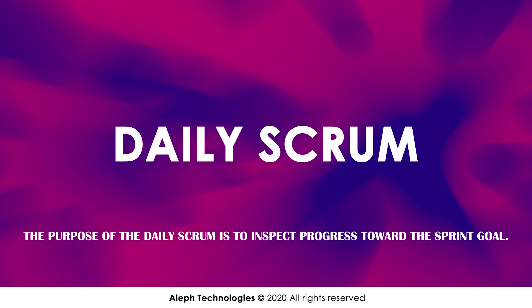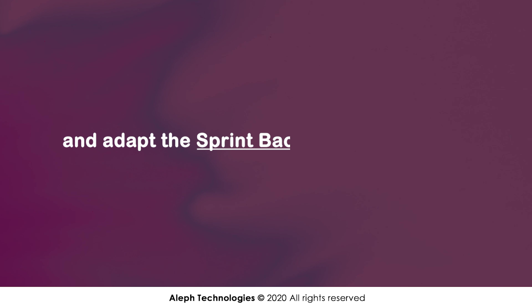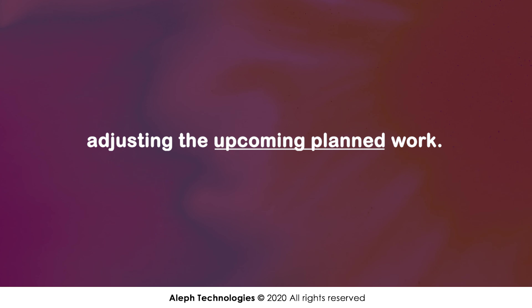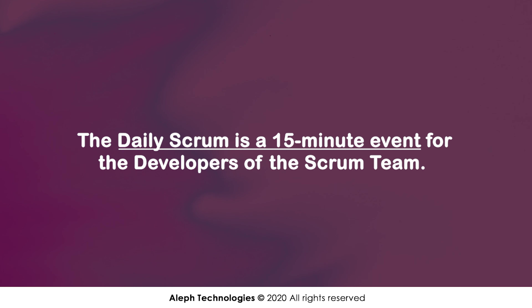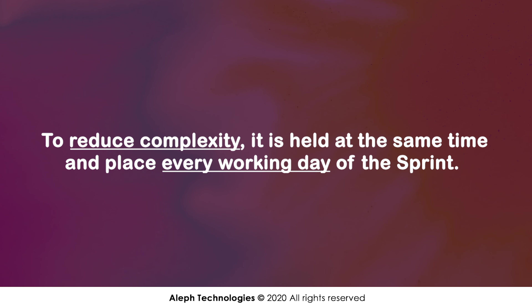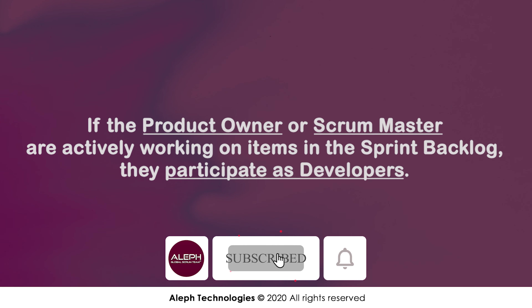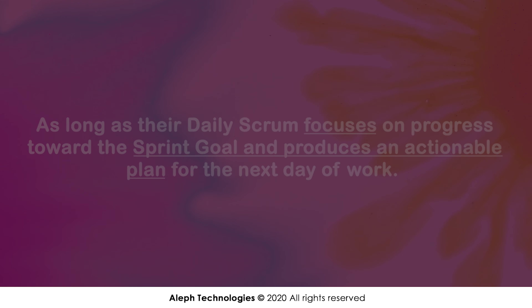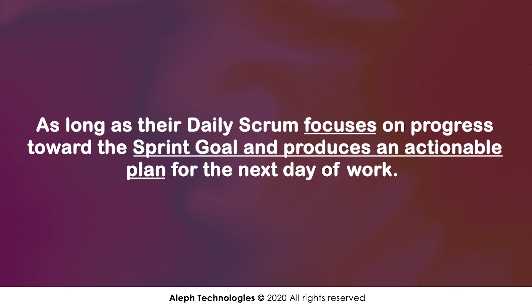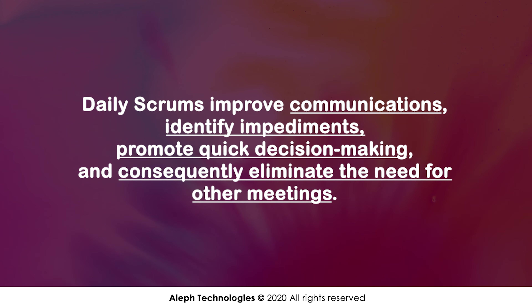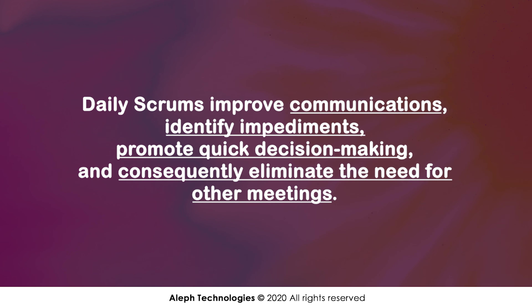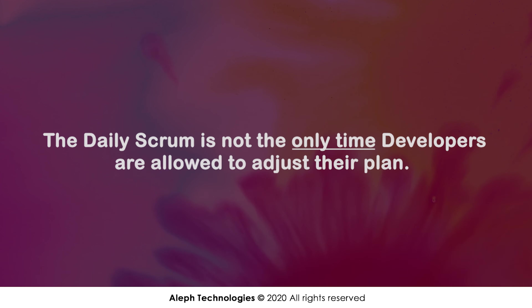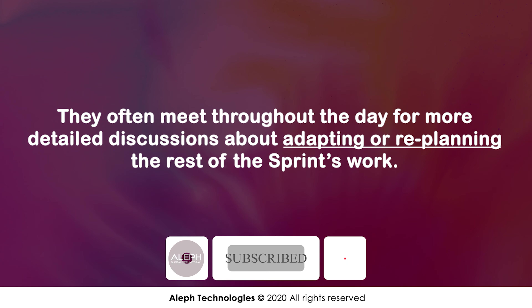Daily Scrum. The purpose of the daily scrum is to inspect progress toward the sprint goal and adapt the sprint backlog as necessary, adjusting the upcoming planned work. The daily scrum is a 15 minute event for the developers of the Scrum team. To reduce complexity, it is held at the same time and place every working day of the sprint. If the product owner or scrum master are actively working on items in the sprint backlog, they participate as developers. The developers can select whatever structure and techniques they want, as long as their daily scrum focuses on progress toward the sprint goal and produces an actionable plan for the next day of work. This creates focus and improves self-management. Daily scrums improve communications, identify impediments, promote quick decision making, and consequently eliminate the need for other meetings. The daily scrum is not the only time developers are allowed to adjust their plan. They often meet throughout the day for more detailed discussions about adapting or re-planning the rest of the sprint's work.